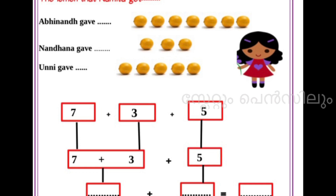Then next, in the same method, we have to find out how many lemons we got. Abhinand gave 1, 2, 3, 4, 5, 6, 7. Then Nandana gave 3. Unni gave 5. So 7 plus 3 plus 5. We can write 7 plus 3. How many? 7 plus 3 is equal to 10. Then 10 plus 5 is equal to 15.